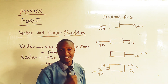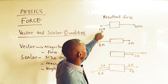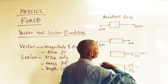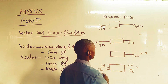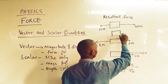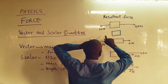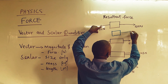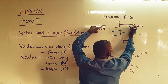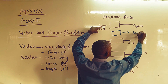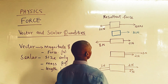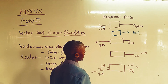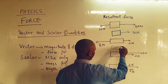In the first example, we have 10 newtons moving to the left and 20 newtons to the right. The resultant force will be in the direction of the larger force — to the right. Since 10 cancels 10, we are left with 10 newtons towards the right direction.